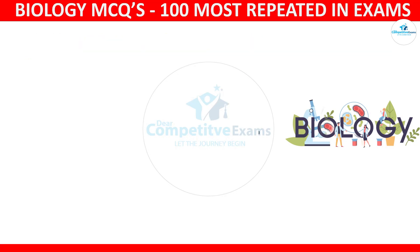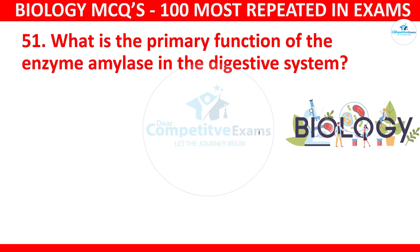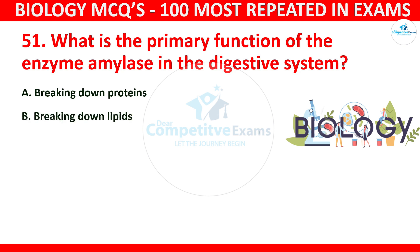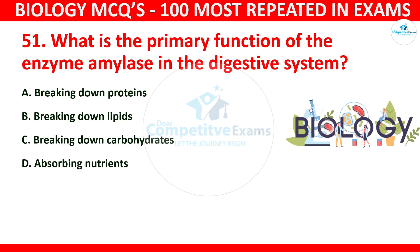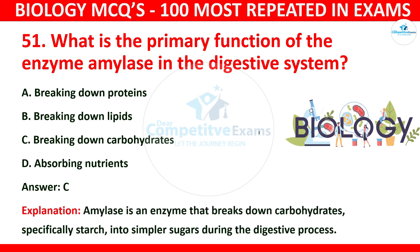Question number 51: What is the primary function of the enzyme amylase in the digestive system? The options are breaking down proteins, breaking down lipids, breaking down carbohydrates, or absorbing nutrients. The correct answer is C: breaking down carbohydrates. Amylase is an enzyme that breaks down carbohydrates, specifically starch, into simpler sugars during digestion.